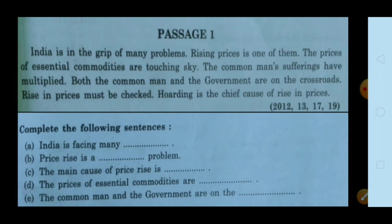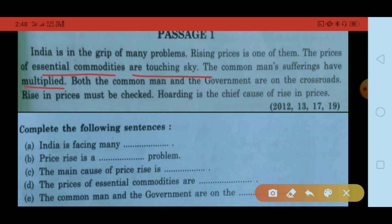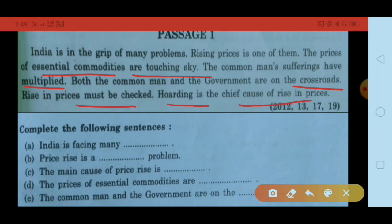तो हमारे पास एक passage है, उसको हमने पहले पढ़ना है: India is in the grip of many problems. Rising prices is one of them. The prices of essential commodities are touching skies. The common man's suffering have multiplied. Both the common man and the government are on the crossroads. Rise in prices must be checked. Hoarding is the chief cause of rising prices.